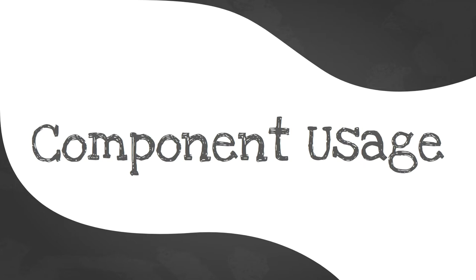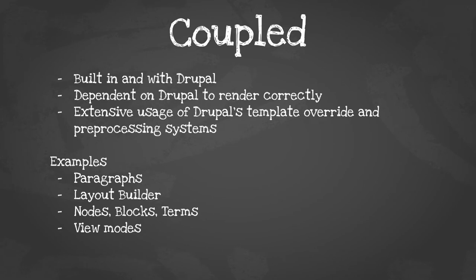The coupled approach is your traditional Drupal approach — built in and with Drupal, dependent on Drupal to render correctly. It usually involves extensive usage of Drupal's templating override system, preprocessing, twig tweak, twig filters, and helpers that Drupal provides. When thinking about this type of approach, you're using paragraphs, layout builder, nodes, blocks, terms, view modes, and so on.